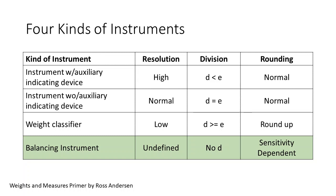This is a slide from part one showing the four kinds of instruments. You can see that the high-resolution instruments appear at the top, and we move down to normal and low resolution. I will start with the balancing instruments with undefined resolution, as these highlight the confusion surrounding E and D.